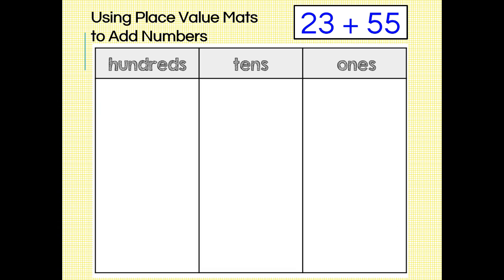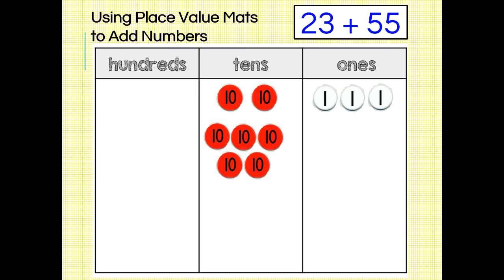The first thing I need to do is lay down place value chips for my addends. For 23, I will lay down two tens disks and three ones disks. For 55, I will lay down five tens disks and five ones disks.